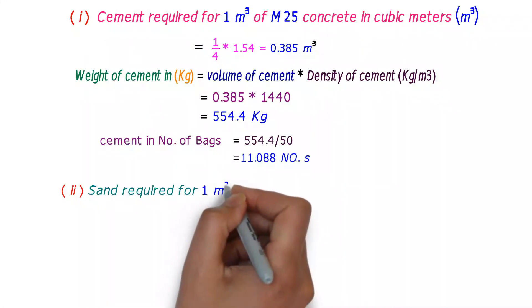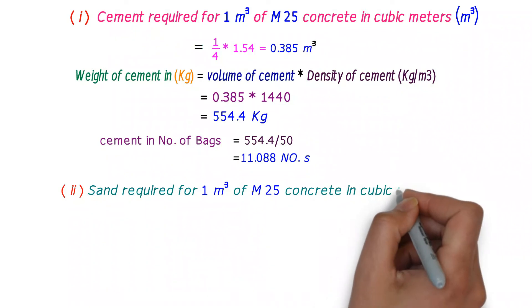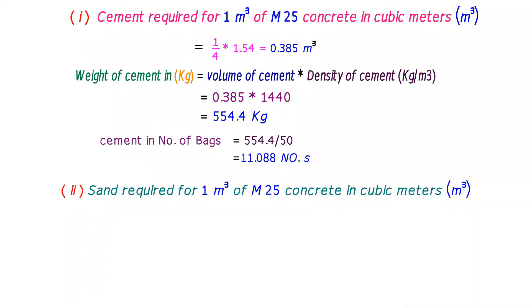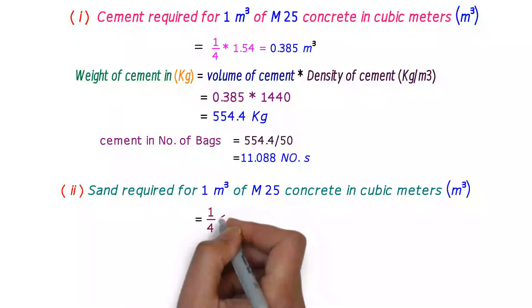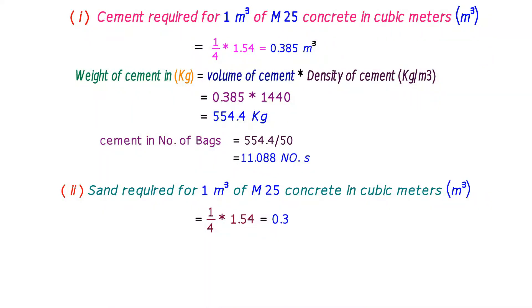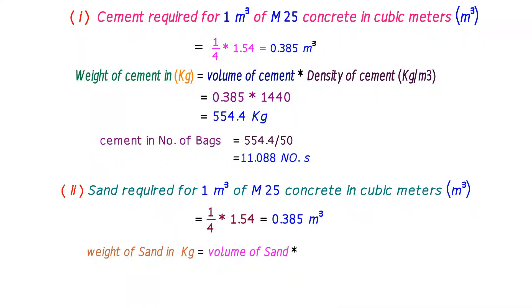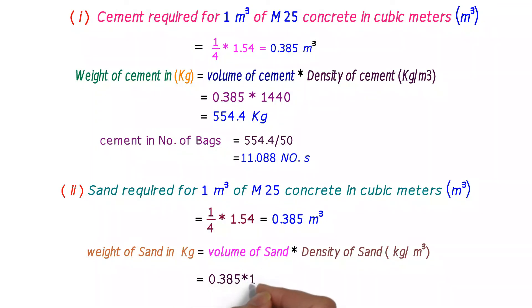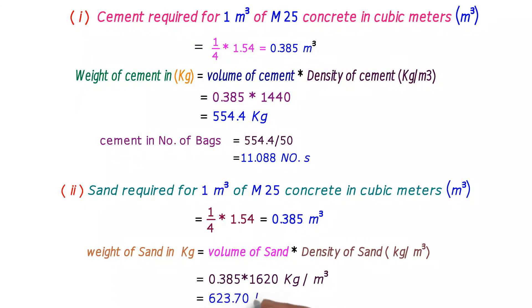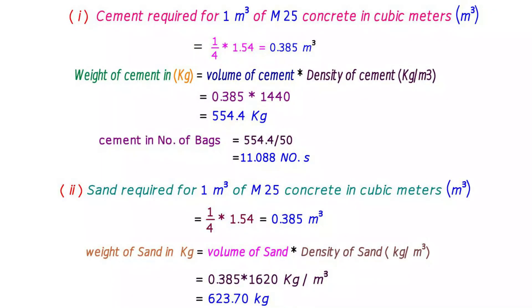Next, the sand required for 1 cubic meter of M25 grade concrete in cubic meters. The volume of sand required is equal to 1/4 × 1.54 = 0.385 meter cube. The weight of sand is equal to volume of sand multiplied by density of sand. The density of sand varies from 1600 to 1700 kg per meter cube; here we take 1620 kg per meter cube. The weight of sand is 623.70 kg.